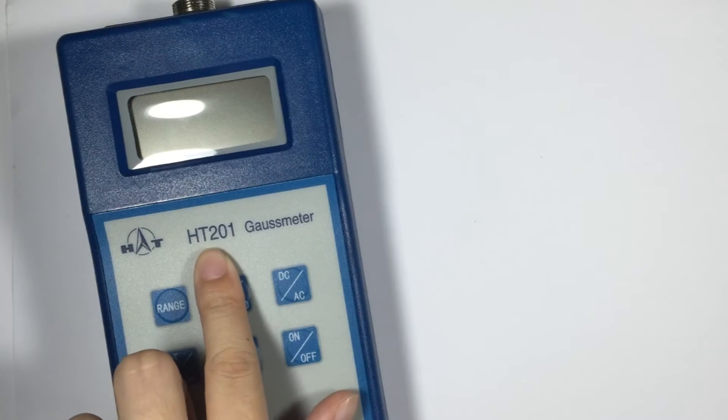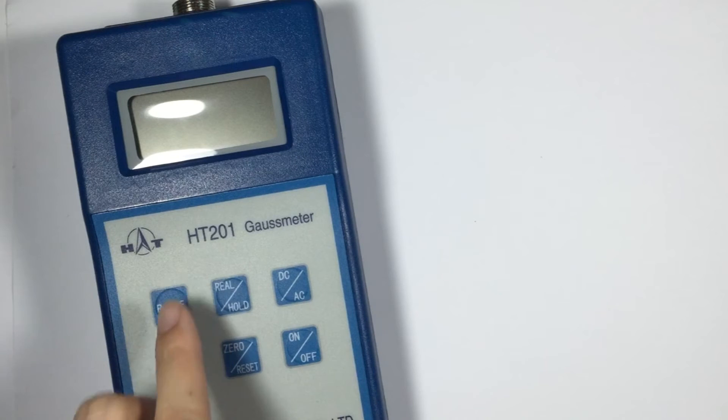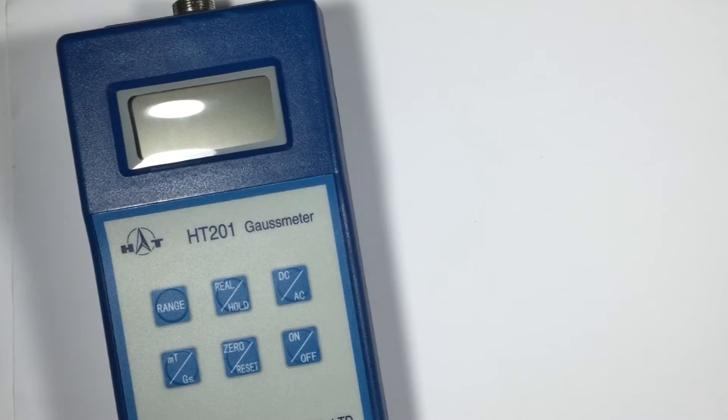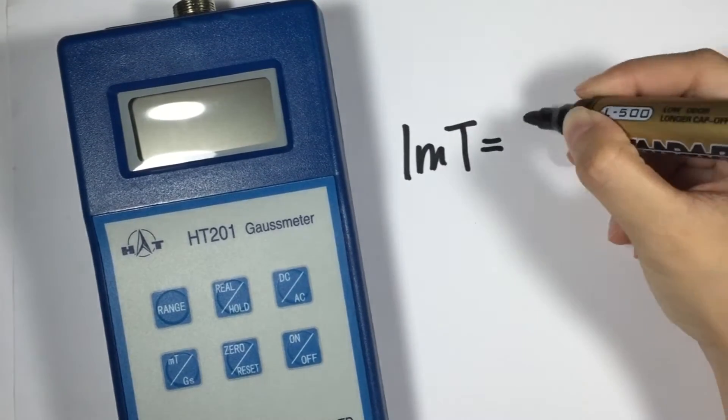We have here an HT-201 gauss meter. It has 2 units of measurement available, the gauss and the milli-tesla. So 1 milli-tesla is equivalent to 10 gauss.